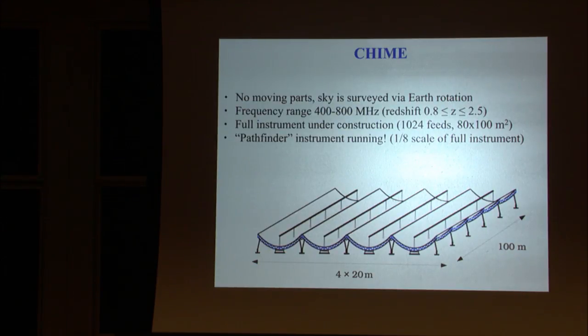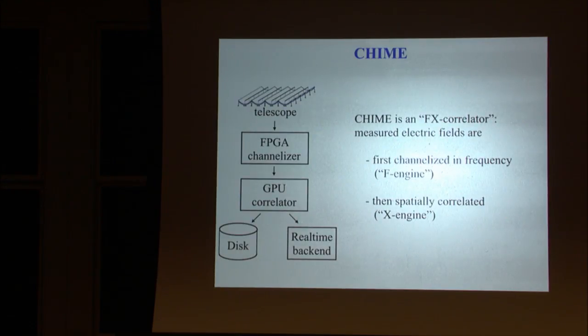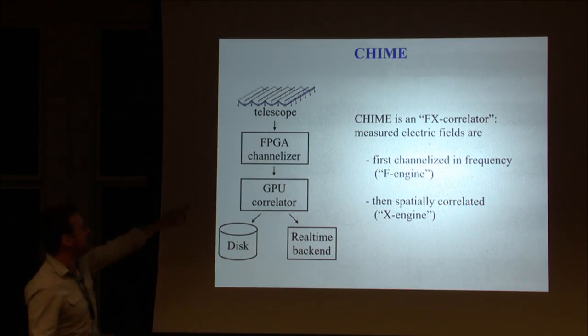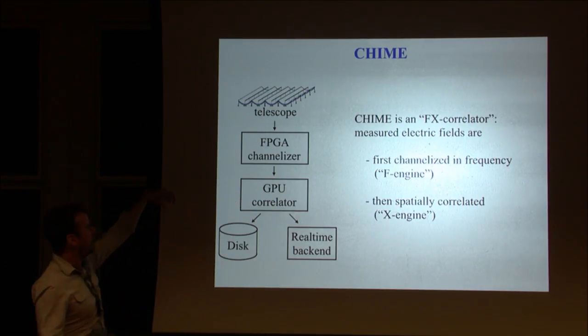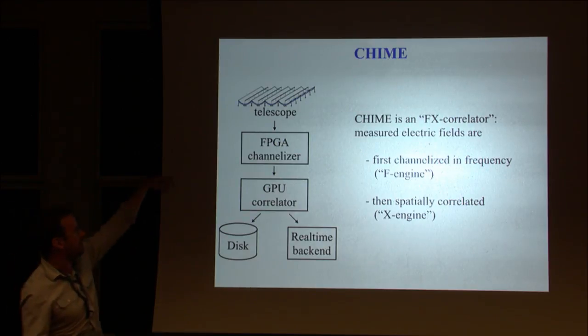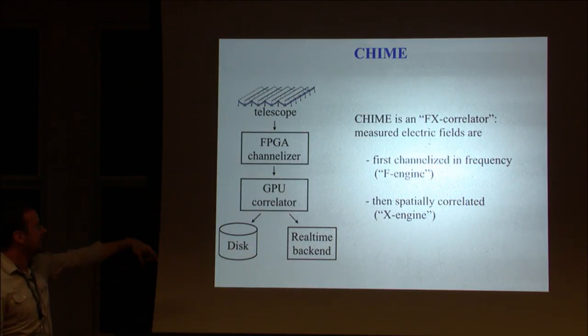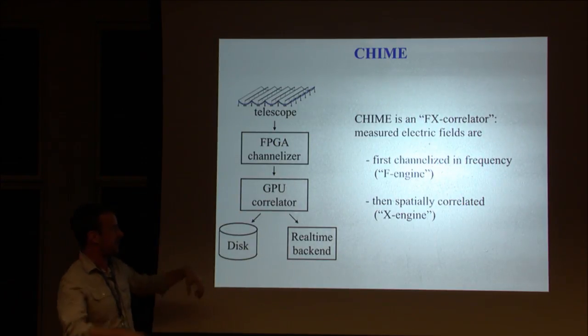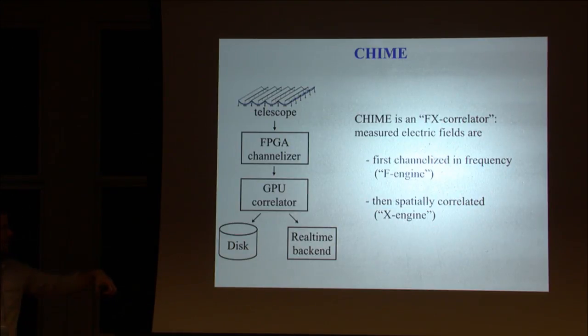There's a pathfinder instrument which is running. That is one eighth the collecting area of the full instrument. CHIME is what's called an FX correlator. There are two data processing stages: one where the electric fields measured along the telescope are channelized in frequency, and then handed off so that each frequency is independently spatially correlated down the cylinders.